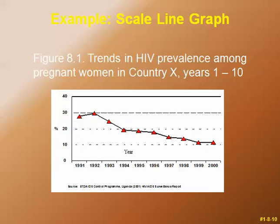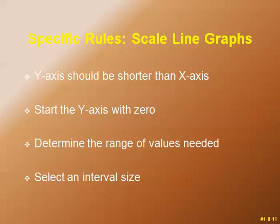In this example, the y-axis — from 0 to 40 percent — represents the frequency of HIV prevalence among pregnant women in country X, while the x-axis represents the years 1991 to 2000. Specific rules for scale line graphs: the y-axis should be shorter than the x-axis, and the y-axis should start at 0.